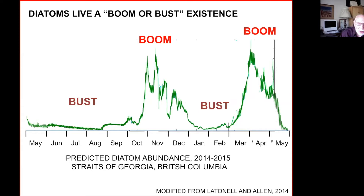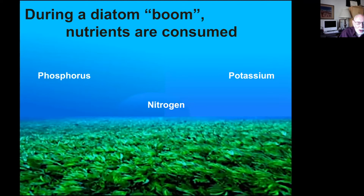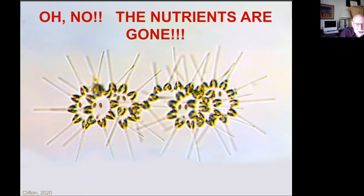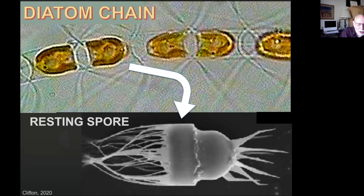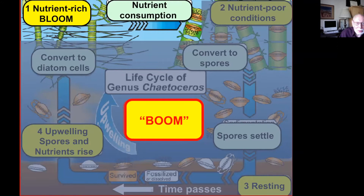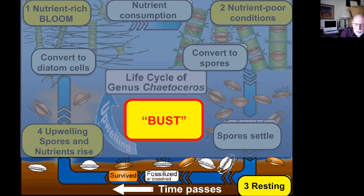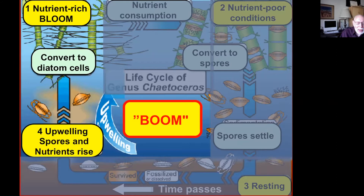During a boom, nutrients are consumed by the diatoms and eventually depleted in the surface waters. What does a diatom do? It converts itself into a resting spore. The resting spores have a bit more silica in the outer shell, making them slightly heavier. So they settle through the water, come to rest on the seafloor, and there they can sit for up to 100 years, waiting for the right conditions to bring them and the nutrients back to the surface, where they reconvert to diatom cells and start the process all over again.